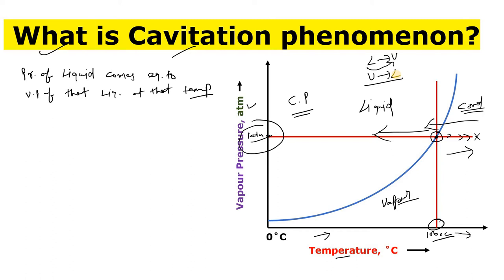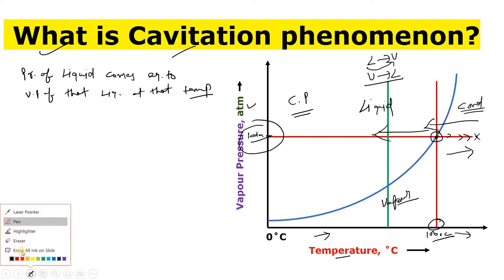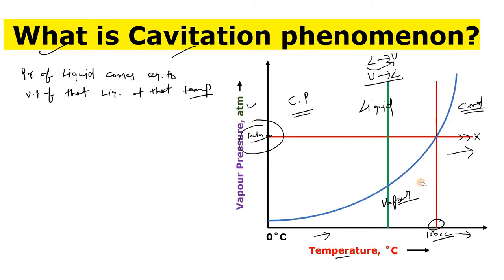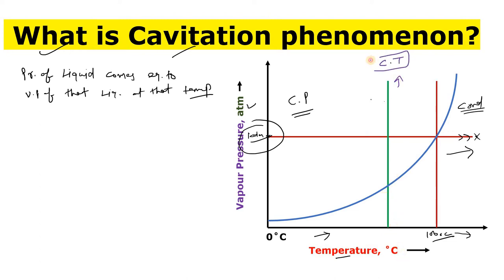But for our interest, our concern is this other line — a constant temperature line — meaning your temperature is constant and now you are adjusting the pressure. Let's suppose your liquid is at a certain point in the liquid region.